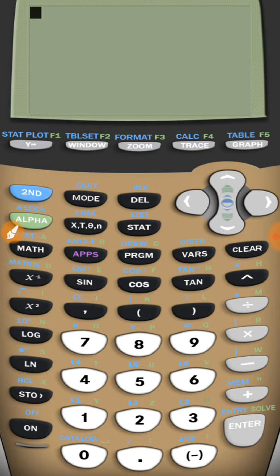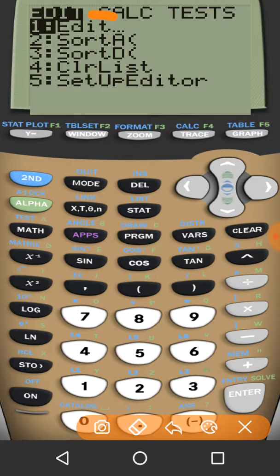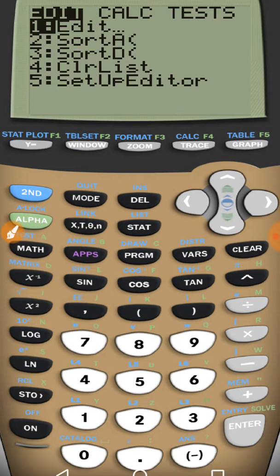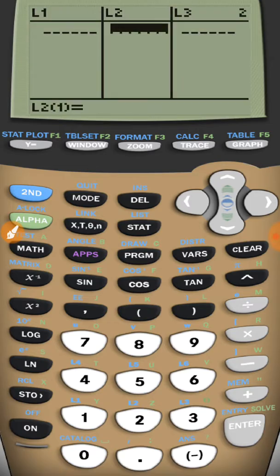First off, we need to go to our stat. So press the stat button in the middle there. And we're going to need this first entry, edit right there.